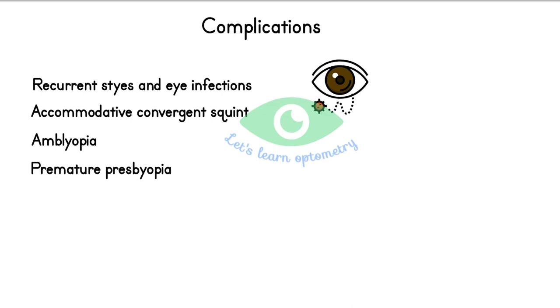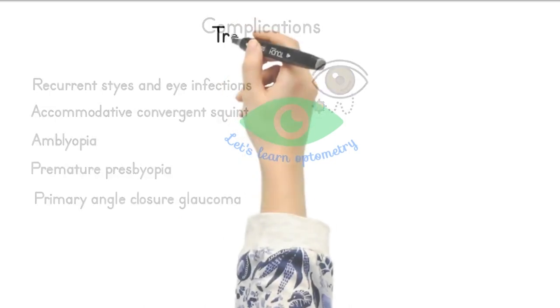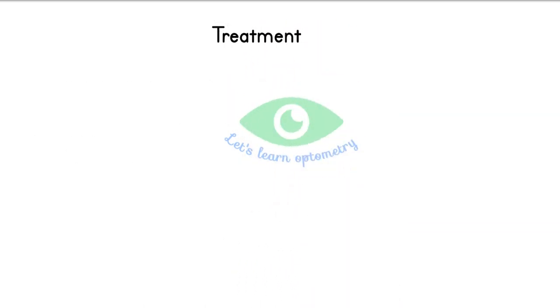Hypermetropic individuals often have shallow anterior chamber, so they have increased chance of developing primary angle closure glaucoma. Treatment: complete cycloplegic refraction is mandatory before treating the patient. Optical correction can be given with convex lenses to bring the focus on the retina.